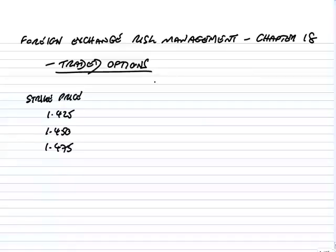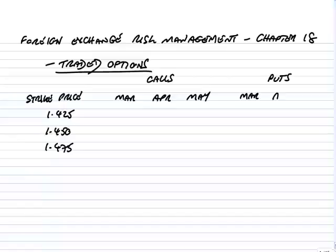There are six columns split into two blocks. One heading says 'calls' with March, April, May, and another heading for puts with March, April, May. You've then got all those figures: 6.29, 3.81, 1.53, and so on.